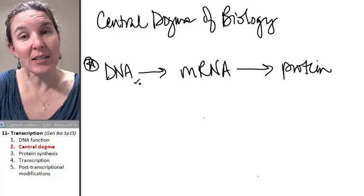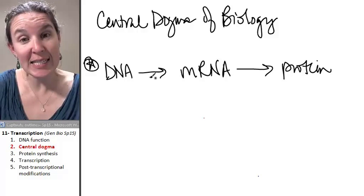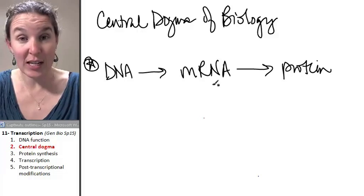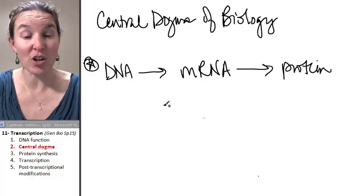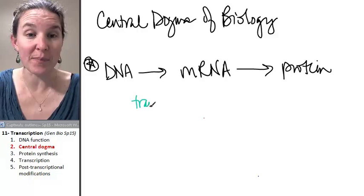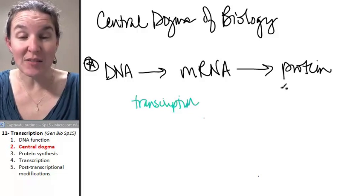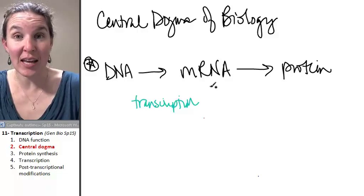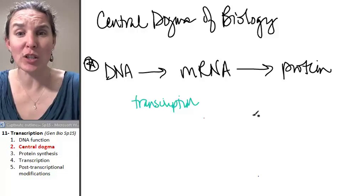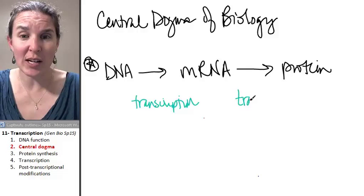The process of taking the information in DNA and turning it into a molecule of messenger RNA is called transcription. The process of taking the messenger RNA and using the information in that to build a protein is called translation.